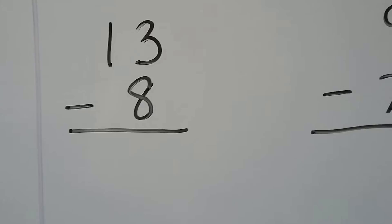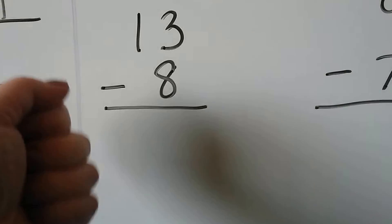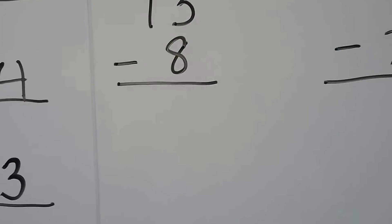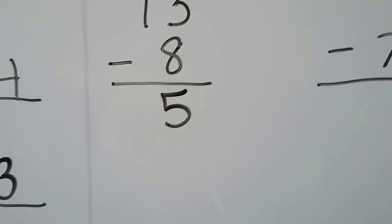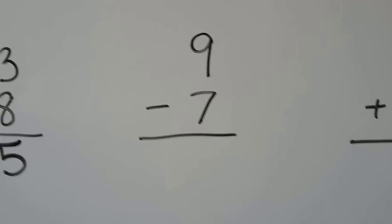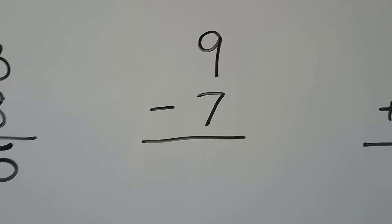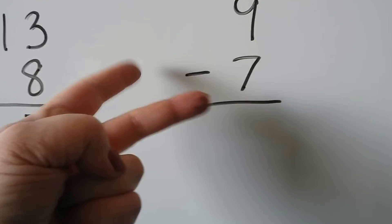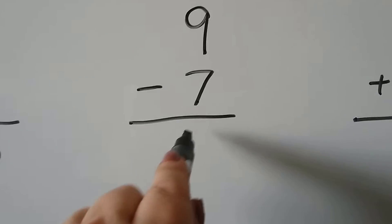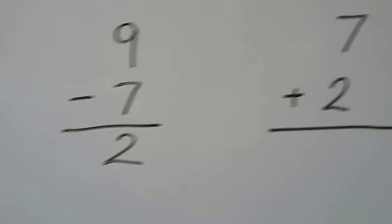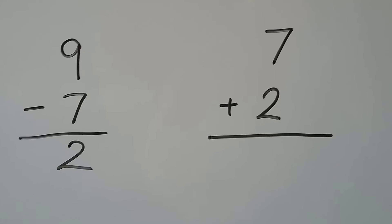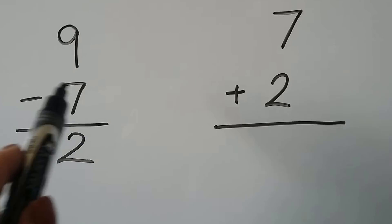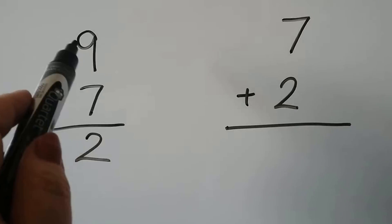13 minus 8 — we can start with 13 and count back to 8: 13, 12, 11, 10, 9, 8. That's 5. For 9 minus 7, we can start at 7 and count up to 9: 7, 8, 9 — we needed 2. For 7 plus 2, we can use a related fact: 9 minus 7 is equal to 2, so 7 plus 2 is equal to 9.